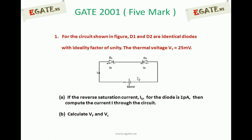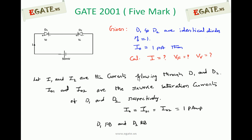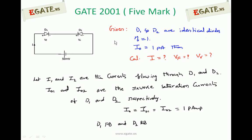This is a 5 mark question, so it does not have any options. We have to solve this problem. This is the given diagram. D1 and D2 are identical diodes with ideality factor of 1. Eta is equal to 1. And reverse saturation current is given for the diode is 1 pA.